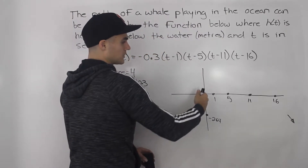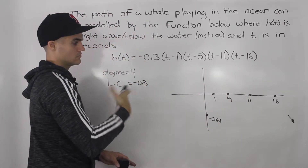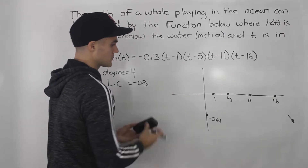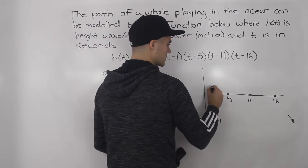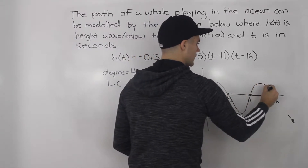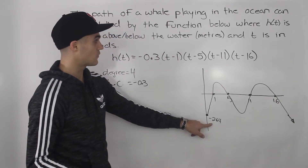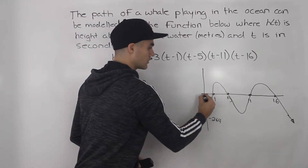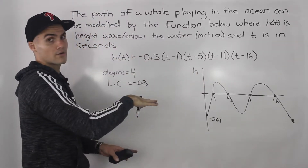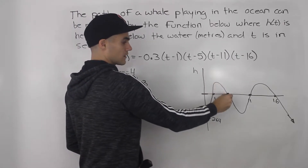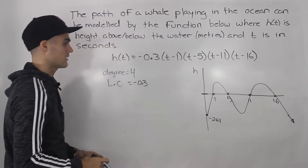Since t represents time, we're only concerned with positive t values — we're not dealing with negative times. So we disregard that portion of the graph. The sketch roughly shows the whale starting 264 meters below the water at t = 0, then rising above the water level, dipping back below, rising above again — basically jumping in and out of the water as time progresses.